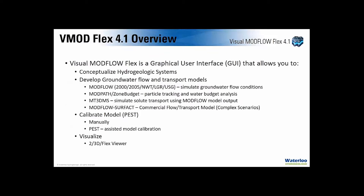Visual ModFlow Flex is a graphical user interface that allows you to build groundwater models and conceptualize hydrogeologic systems. The models are based largely on the USGS ModFlow codes and its variants, along with ModPath, Zone Budget, and transport options including MT3D-MS, and new to this version, ModFlow Surfact. You can calibrate your model using PEST or manually, and visualize results in 2D, 3D, or using the Flex or Composite Viewer. New features are marked with an asterisk and will be covered individually.